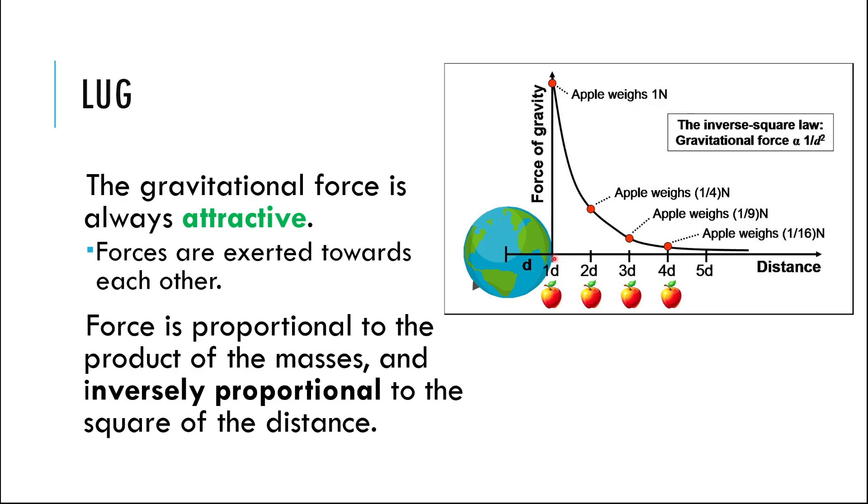If I take that apple and I take it out into outer space and I go up a distance of 2d, twice the radius of the Earth away. Now, I've doubled the distance, and because it depends on 1 over d squared, I'm going to do 1 over 2 squared as 1 over 4. The apple's weight, the force due to gravity, decreases by a factor of 4 when I double the distance.